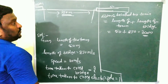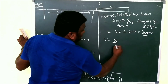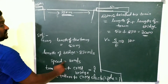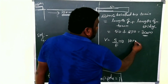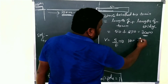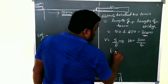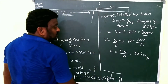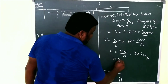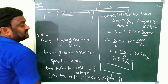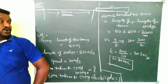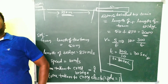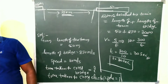So the total distance is 300 meters. We use the formula: V equals S by T, so T equals S by V. Speed of train is 10 meters per second and distance is 300 meters. Therefore, T equals 300 divided by 10, which is 30 seconds. So the train crosses the bridge in 30 seconds. Distance traveled: 300 meters — bridge length plus train length.